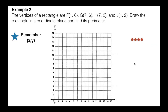Here we go with example two. Same thing — the first thing you're going to want to do is create your coordinate plane. Again, we're only using the first quadrant. You don't have to go all the way up to 15; going to 10 for each axis would be plenty. The vertices of a rectangle are: F is at (1, 6), G is at (7, 6), H is at (7, 2), and J is at (1, 2). Draw the rectangle in the coordinate plane and then find its perimeter. Let's plot the points.